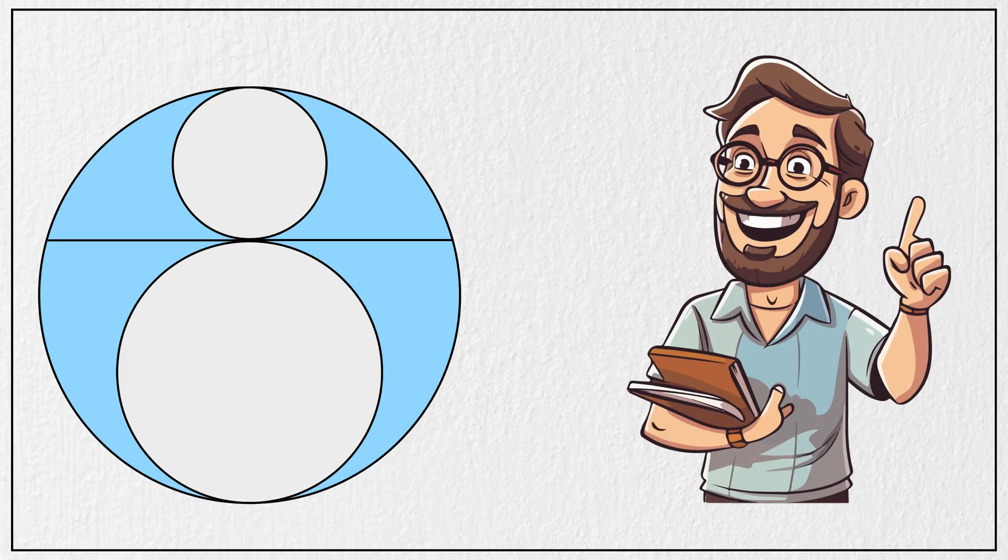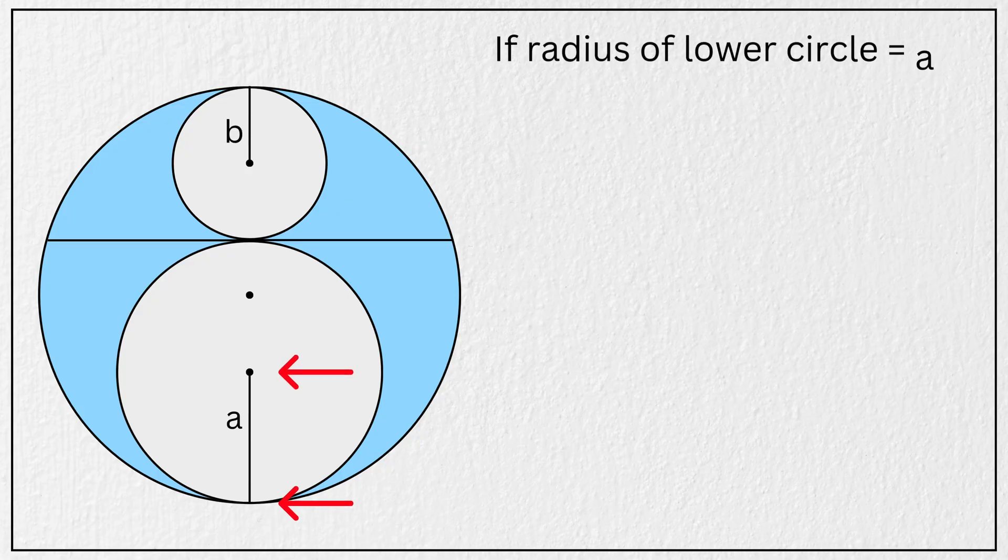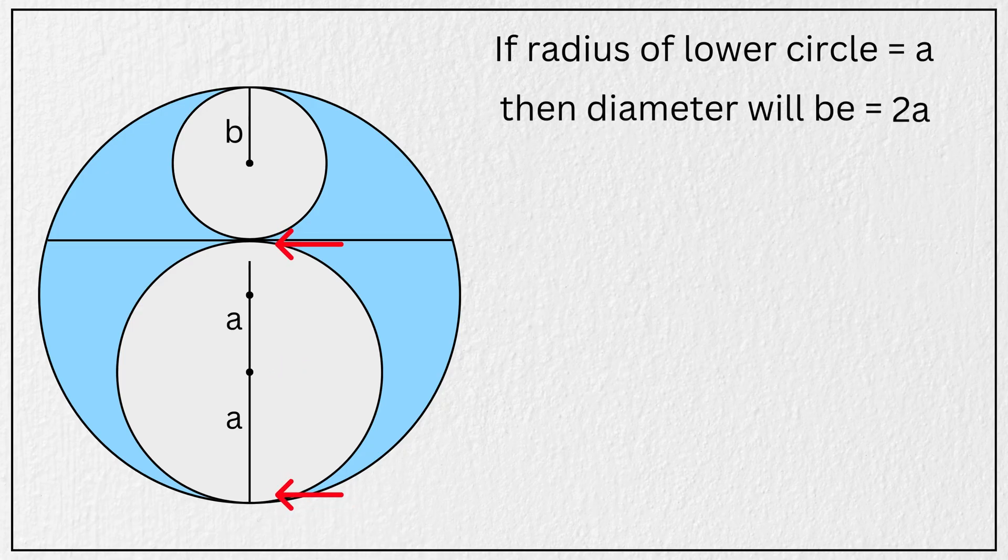To solve using this method, let us mark the centers of all the circles, and let the radius of this circle be A, and the radius of this B. Now look, if the radius of this circle is A units, then its diameter is simply 2 times A.